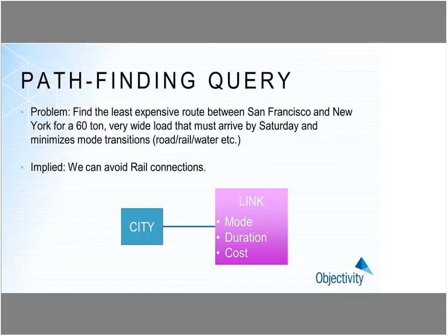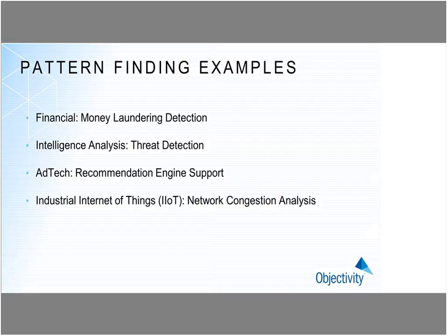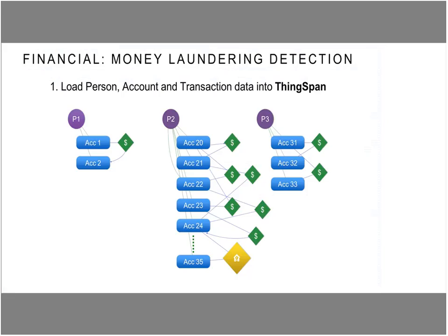As an example of a pathfinding query, here's a very simple schema. The vertices are city objects, and the edges are link objects with a many-to-many relationship. The mode would be something like road, rail, air, or water; the time it takes to traverse it; and the cost. So we're going to do four examples: one in the financial arena, one in the government arena, one in advertising technology, and an industrial Internet of Things example. Let's look at money laundering — this is a very simple example. In reality, things are passed through chains of companies and people.